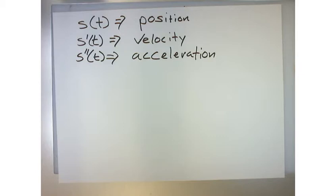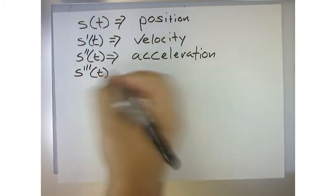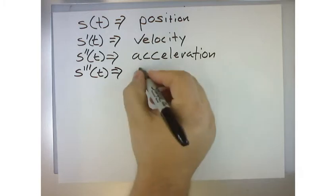Now, if you were to try to figure out the change in acceleration, what would you do next? Triple prime. Triple prime. Very good. So I take the derivative of acceleration, which is s triple prime. Now we call that jerk.